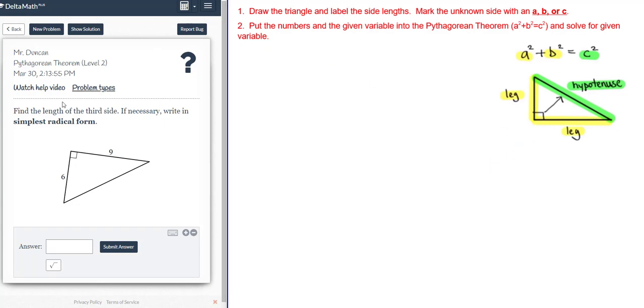Pythagorean Theorem Level 2. Find the length of the third side. If necessary, write in simplest radical form.